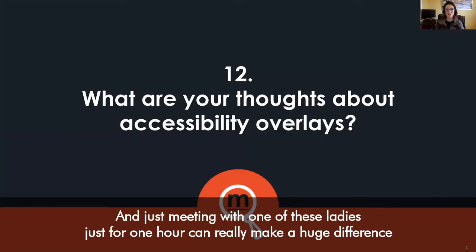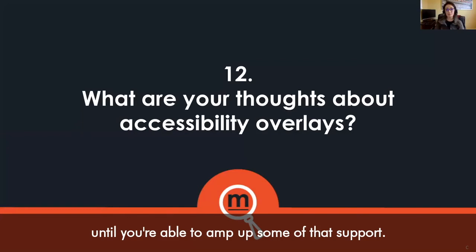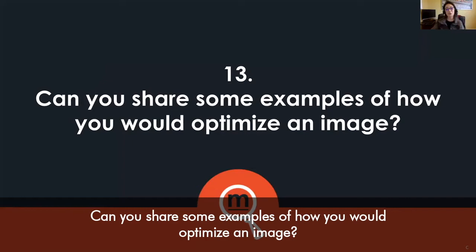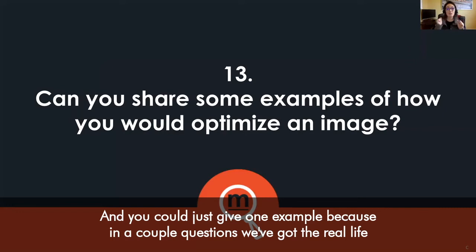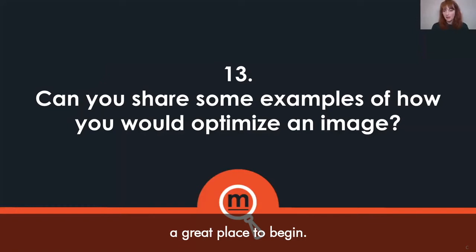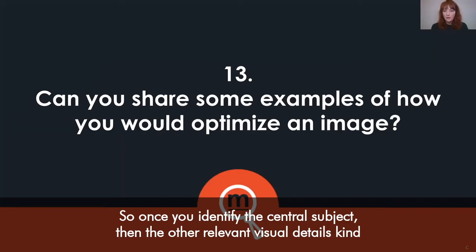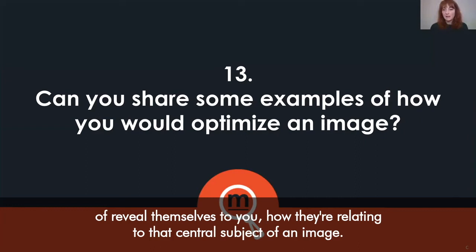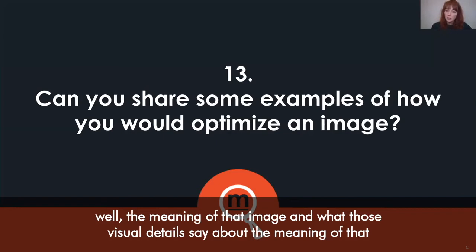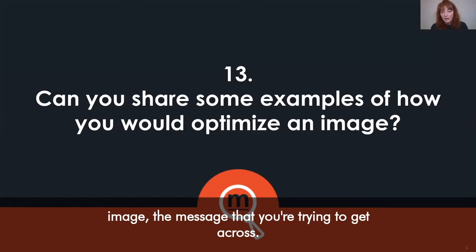The next question is: can you share some examples of how you would optimize an image? Usually there's some sort of central subject for an image, and that's a great place to begin. Once you identify the central subject, the other relevant visual details kind of reveal themselves — how they relate to that central subject — and then incorporating context: the meaning of that image and what those visual details say about the message you're trying to get across.